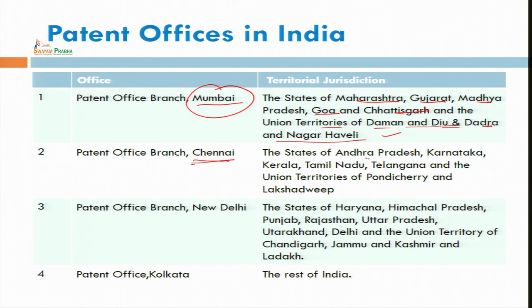The second office is Chennai. Andhra Pradesh, Karnataka, Kerala, Tamil Nadu, Telangana, and the Union Territories of Puducherry and Lakshadweep are included in the Chennai office.